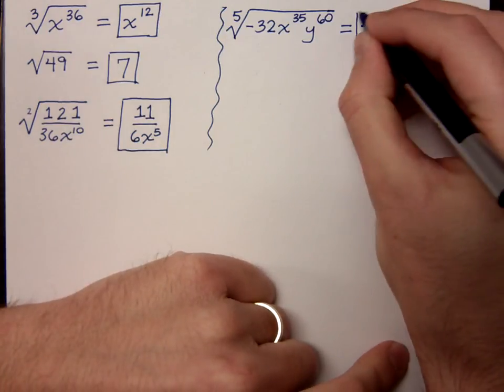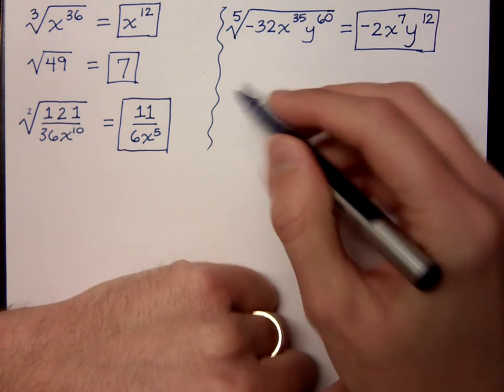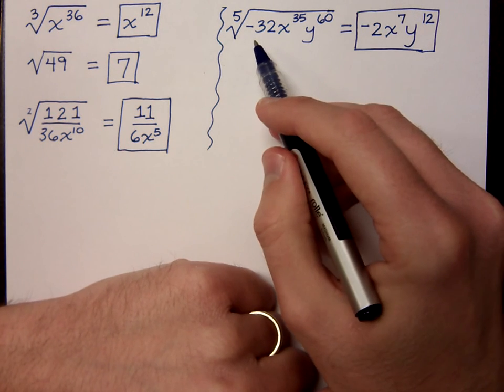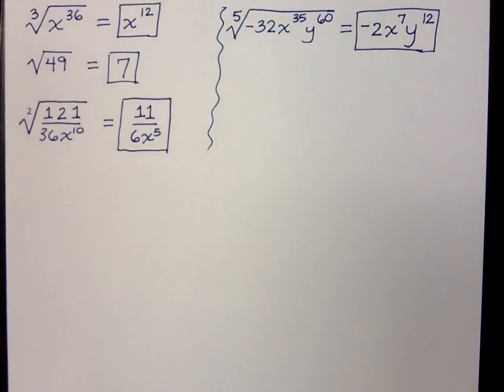So the really, the only difficult part here that we have is working with the coefficients inside here. What's the 5th root of negative 32? Because then after that, it just becomes an exercise in division. Right?